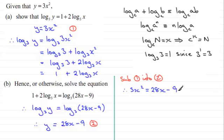And I've got a quadratic equation on my hands. And in the usual way, we need to rearrange this to make it equal 0. So I'm going to subtract the 28x and add 9 to both sides. So I get 3x squared minus 28x plus 9 equals 0.